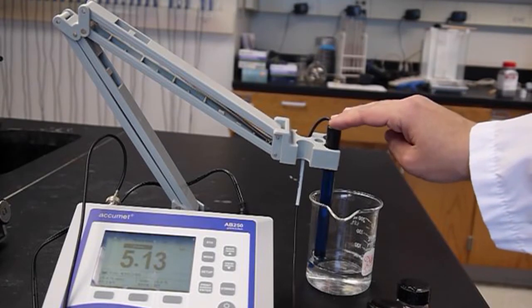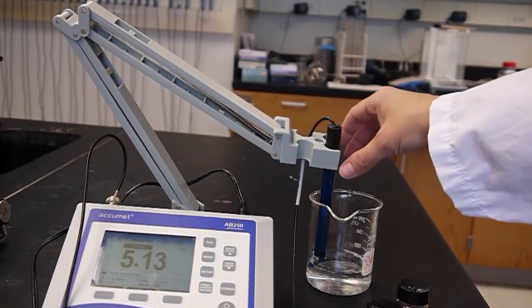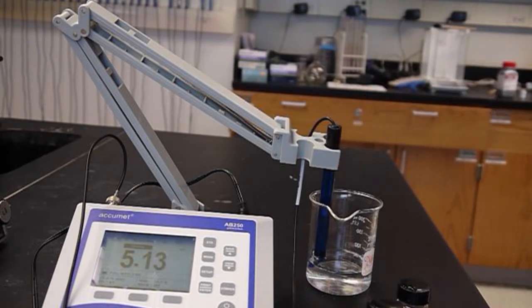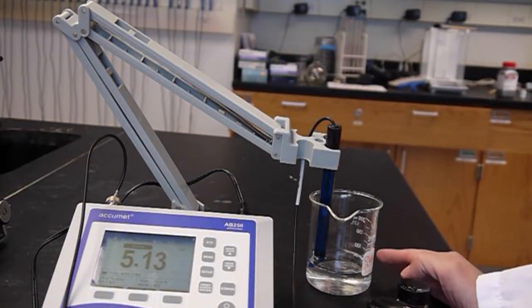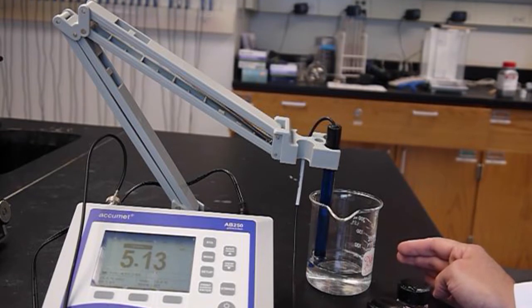So I've placed our pH electrode on the arm of the pH meter. This is going to hold the pH electrode for you while you're running your experiments. I have the electrode in a beaker of water. You want to make sure that the electrode is always submerged in water to prevent the glass bulb from drying out.